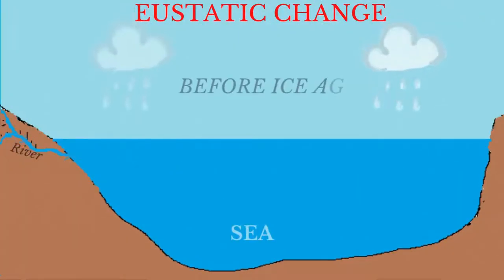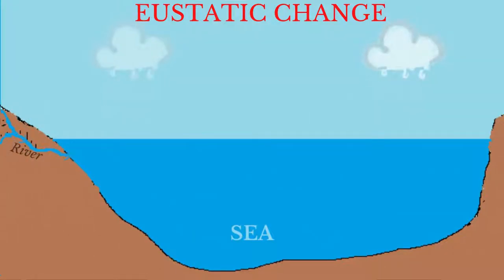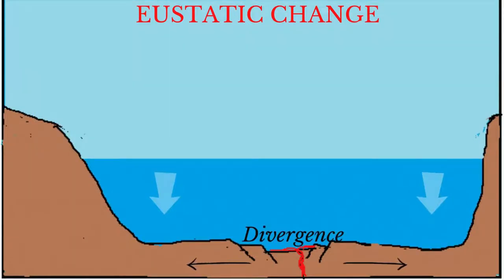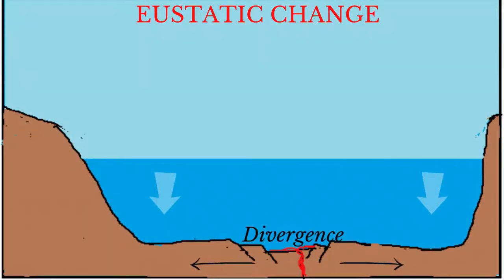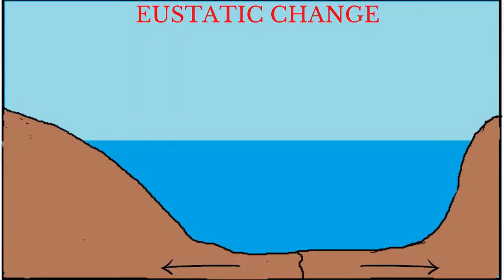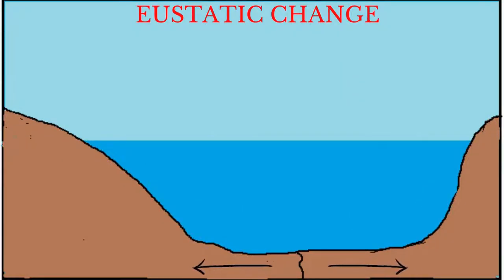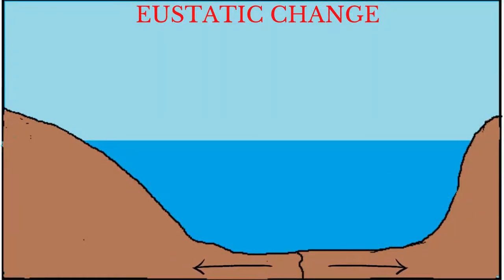The global increase in temperatures also causes sea level to rise by thermal expansion. Eustatic sea level change may also result from tectonic processes. The Earth's oceans were not always in their current shape and configuration. Tectonic processes influence the size of ocean basins and in turn impact sea levels. For example, rifting of tectonic plates at divergent plate boundaries may increase the size of the ocean basin and therefore cause sea level to fall.